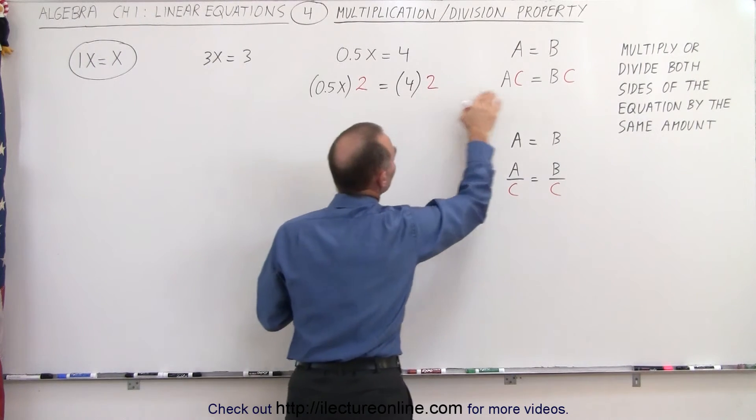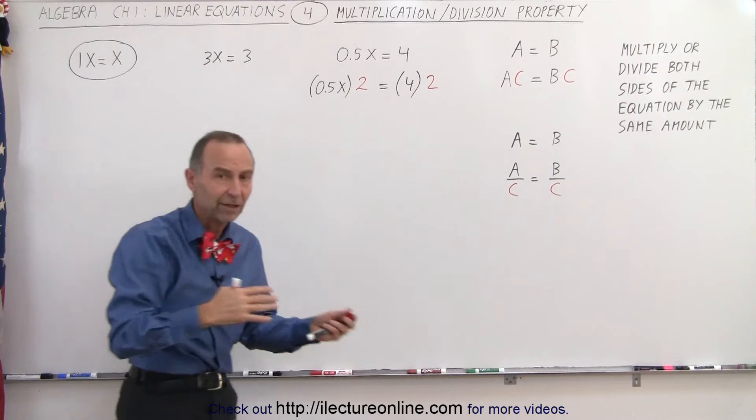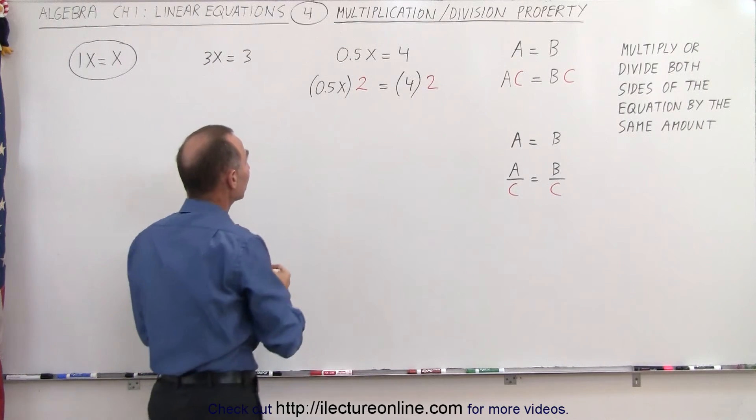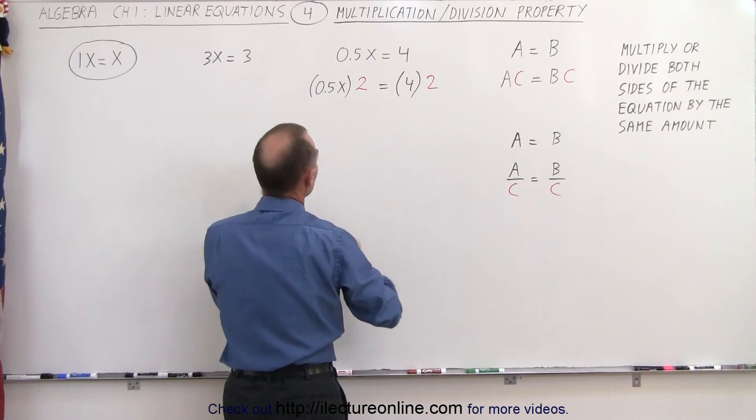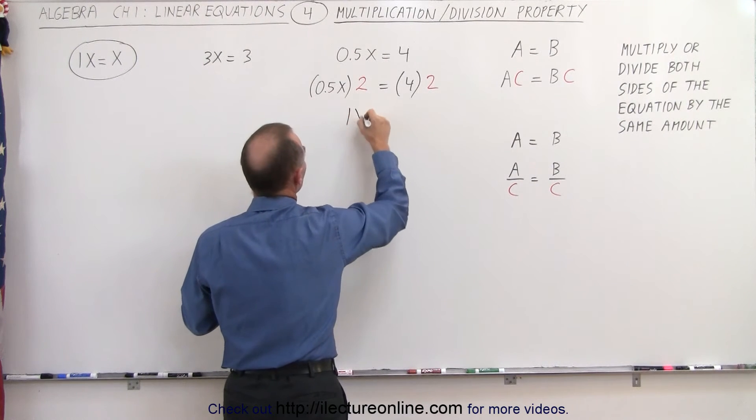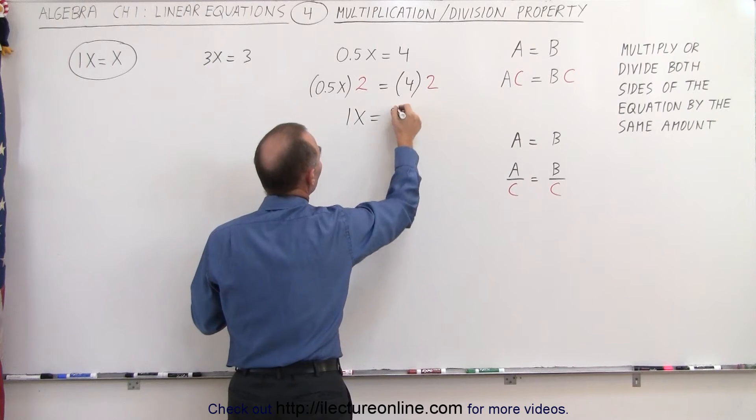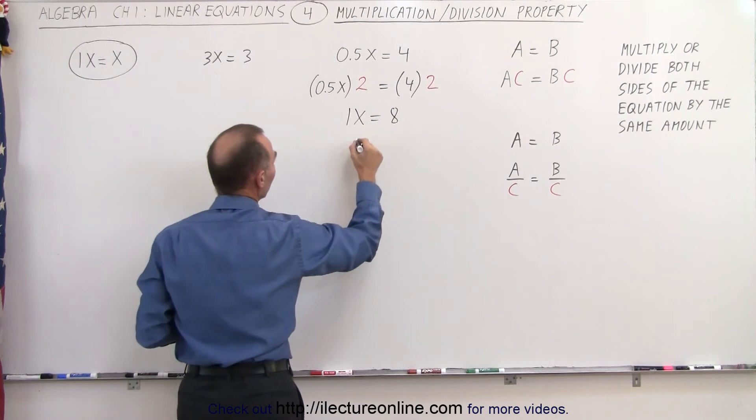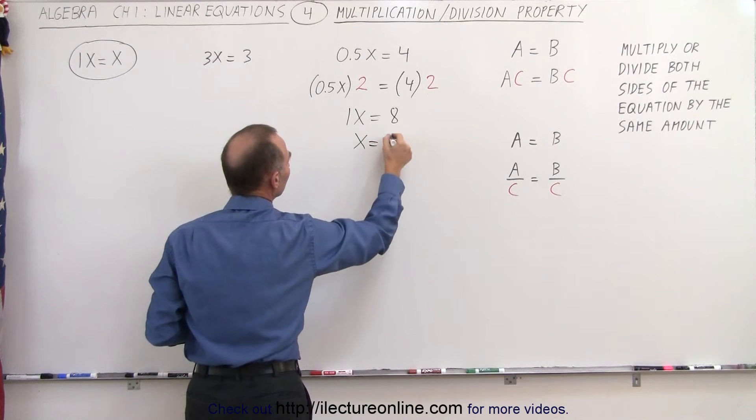So I have the exact same thing as I did over here. I took the left side and the right side, and I multiplied both of them by 2. On the left side, 0.5 times 2 is 1X. On the right side, 4 times 2, which is 8. And of course, we have to realize that 1 times X is simply written as X, so we can write X is equal to 8.